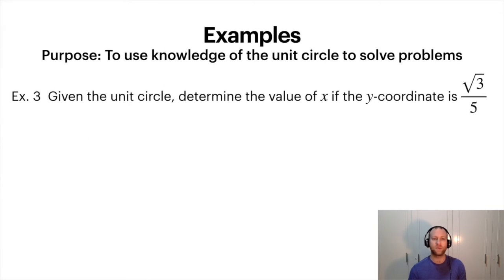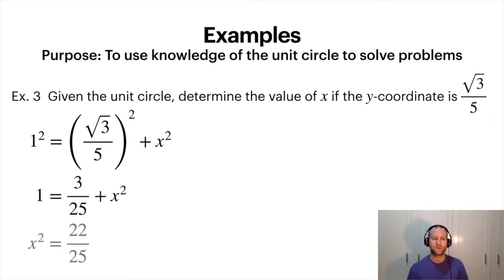Try another example here. So we have a unit circle. We want to know what is the x value if the y coordinate is square root 3 over 5? So because it's a unit circle we've got this equation, and we just need to solve for x. So expand out the squared, put the x squared by itself, take the square root, and we get that x is plus or minus the square root of 22 over 5.